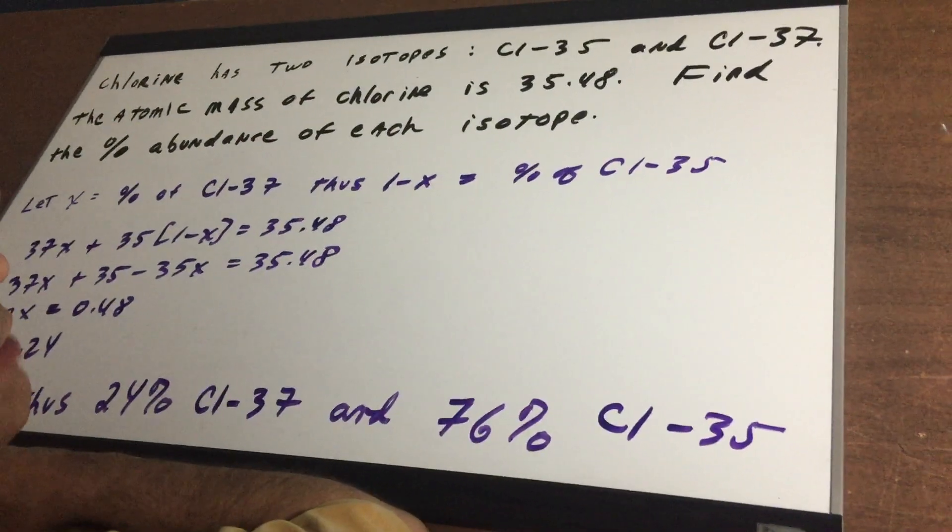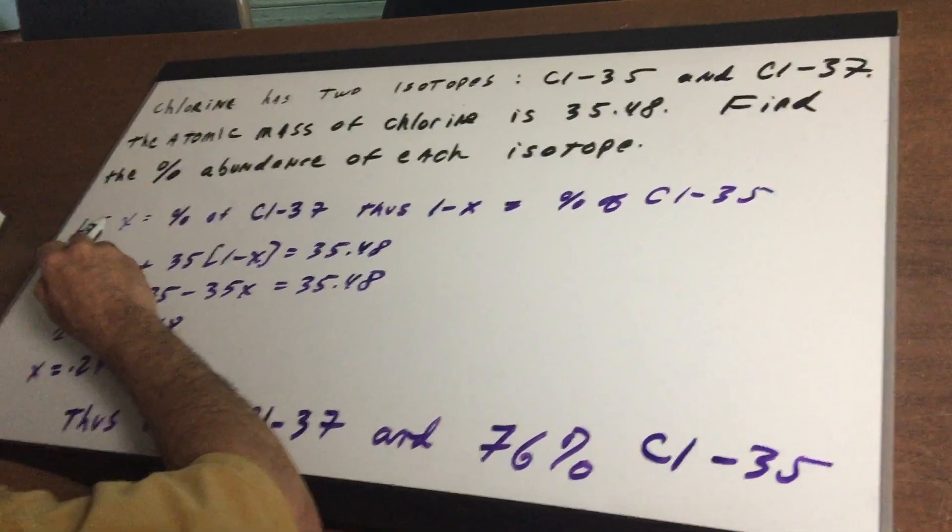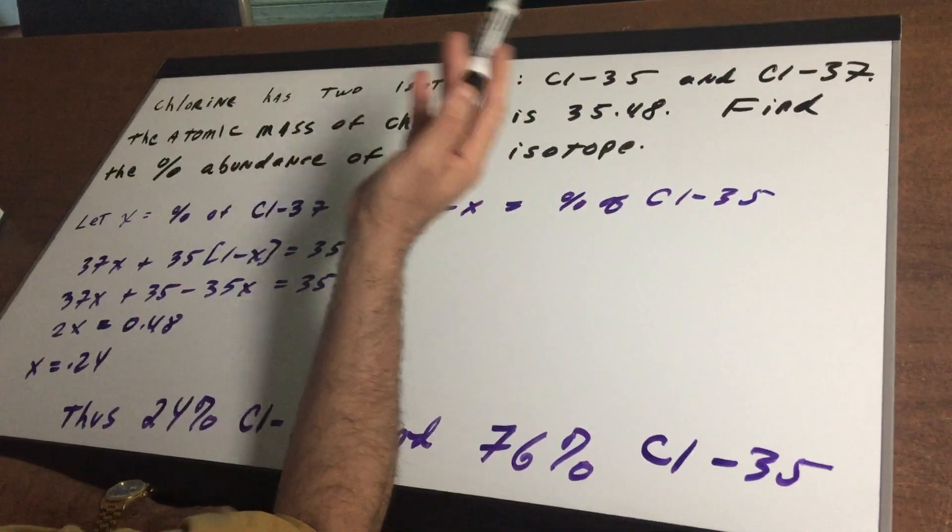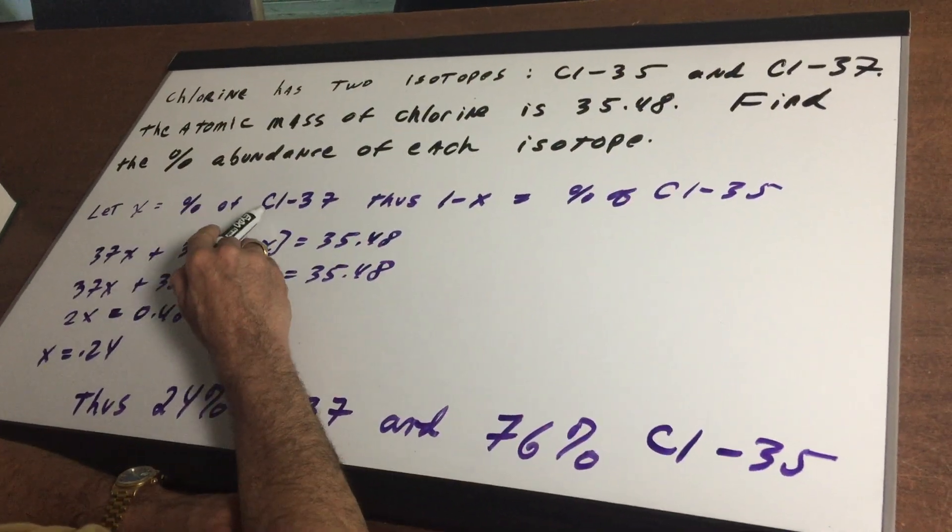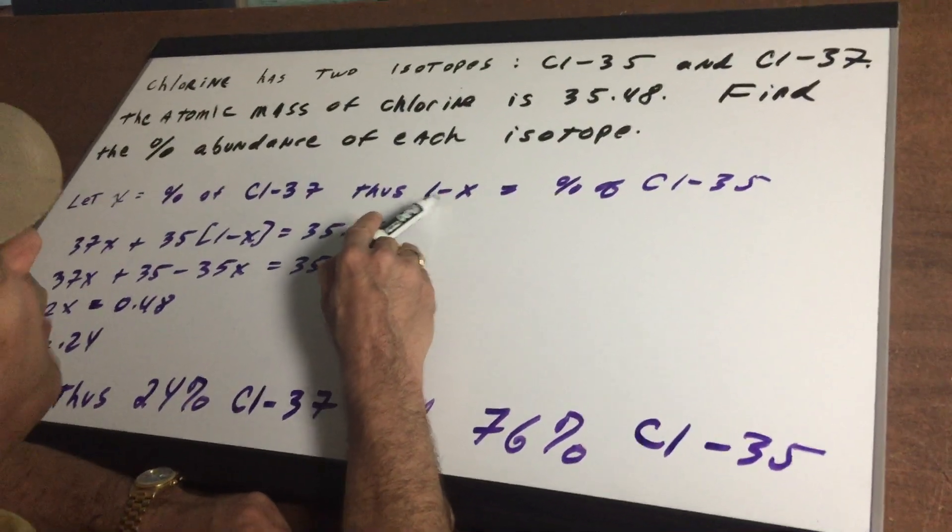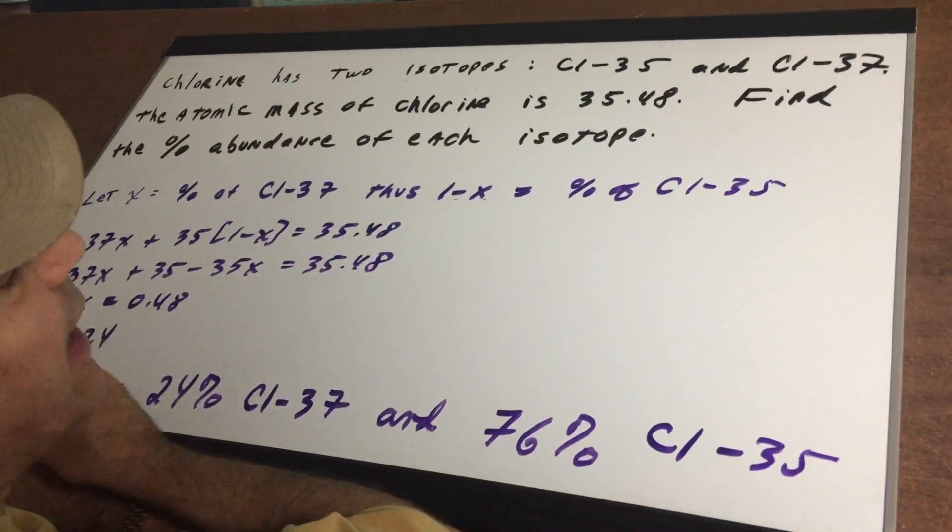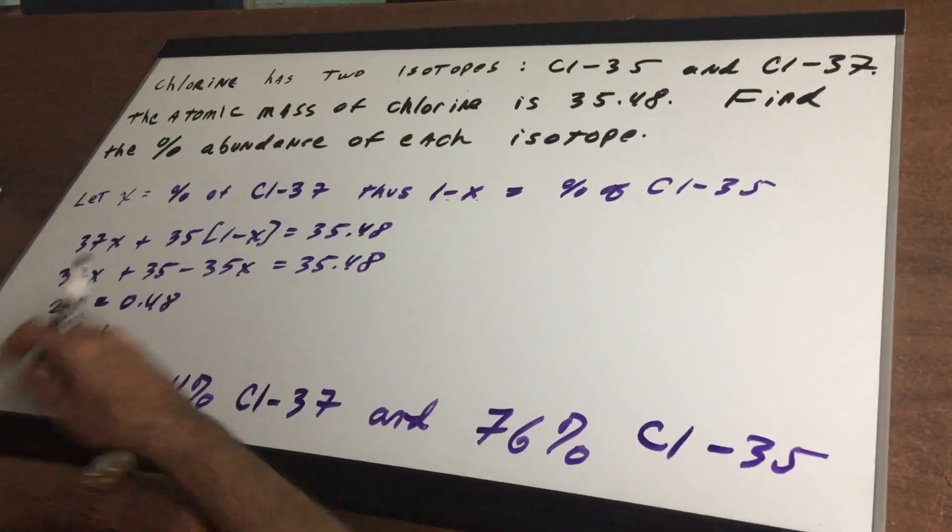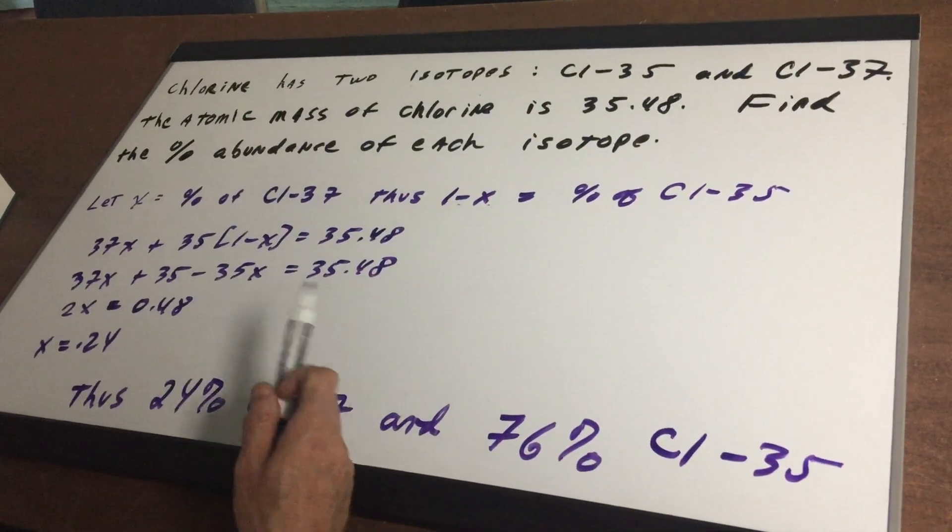This question is a very commonly asked question in general chemistry, and here's how to do it. We're going to let X equal one of the isotopes, so I'll just pick one of them. Let it be the percent of Cl-37. The gimmick is to make the other isotope 1 minus X, and that would be the percent of the Cl-35. So one of the percents is going to be X, the other would be 1 minus X.